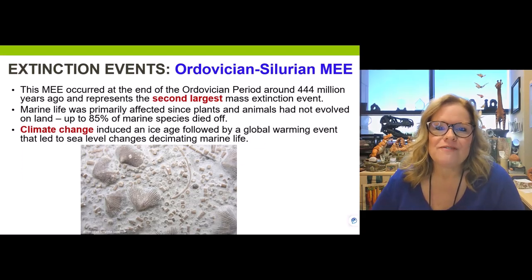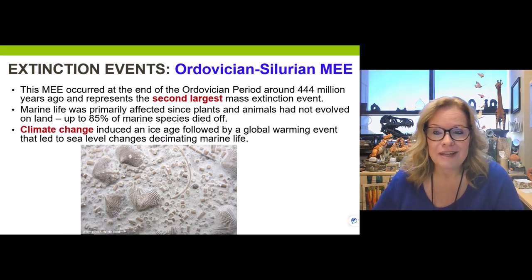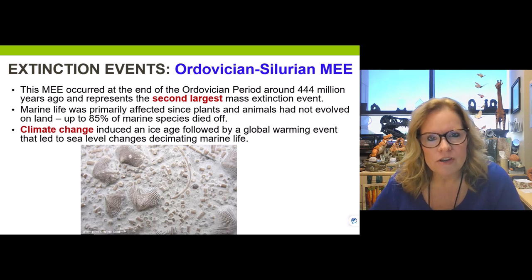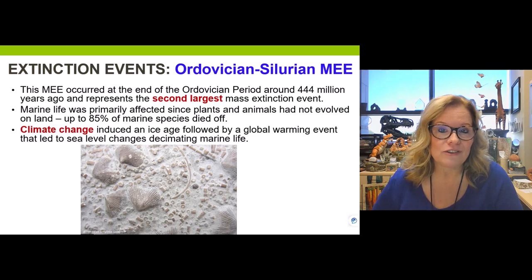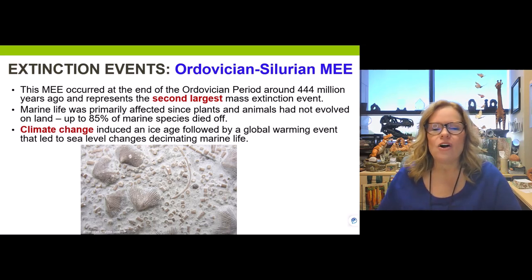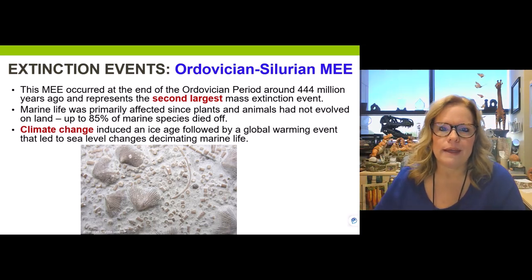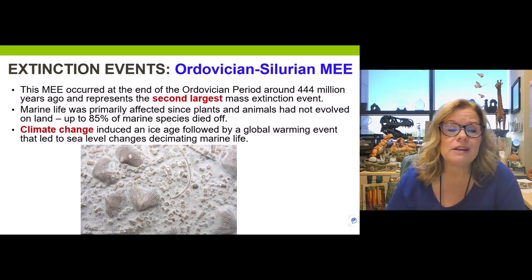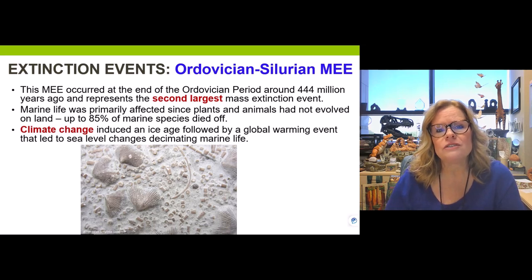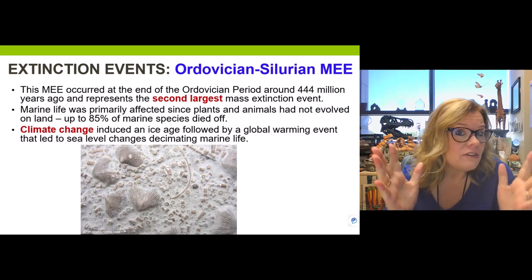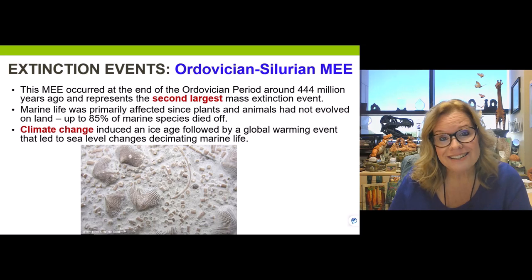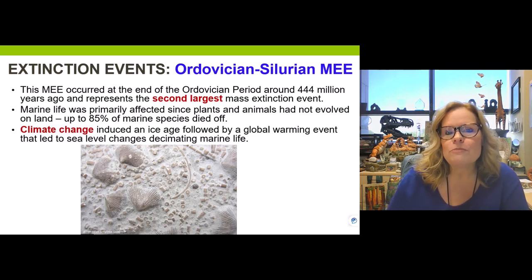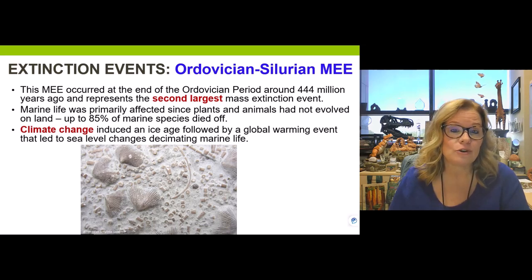As we journey through the five mass extinction events, keep a few things in mind. You'll see, for example, the Ordovician-Silurian mass extinction event. The Ordovician period ended around 444 million years ago, and the Silurian period started at the same time. It's easy to think all extinctions were instantaneous, but they don't work that way. The fossil record tells us most extinctions happen over a stretch of time, varying based on environmental or climate conditions.